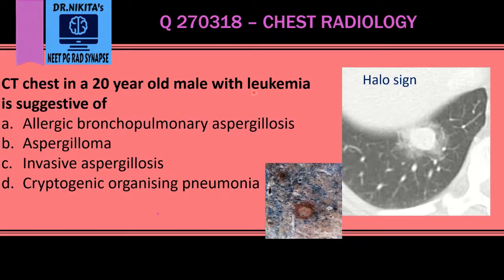The history of leukemia tells us that the patient is immunocompromised and hence prone to fungal infections. While this sign has been described in many other conditions, in a patient with leukemia it becomes almost specific for invasive aspergillosis.